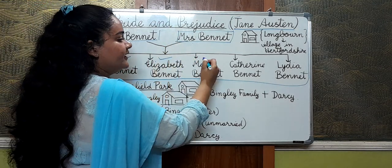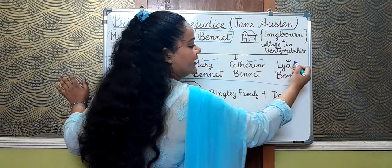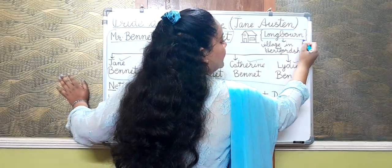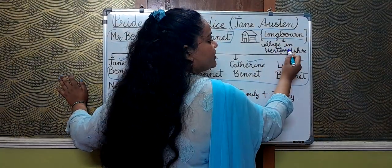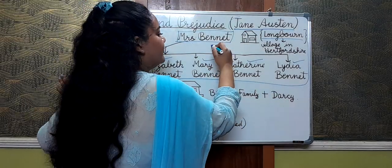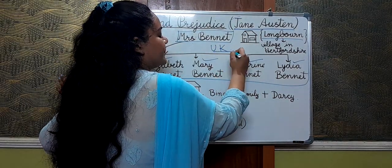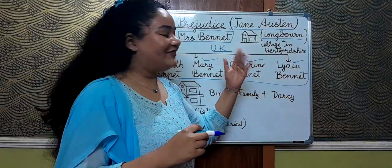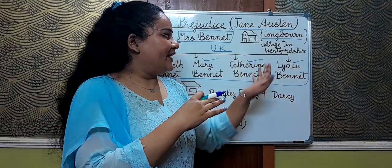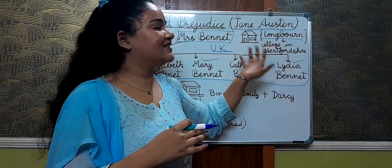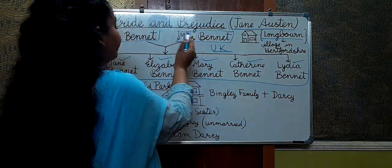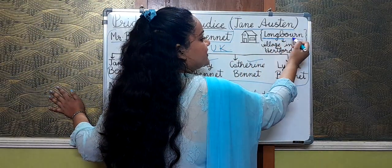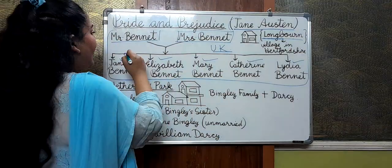The five daughters are: Jane Bennet, Elizabeth Bennet, Mary Bennet, Catherine Bennet, and Lydia Bennet. The Bennet family lives in Longbourn, which is a village in Hertfordshire. This is a story set in the United Kingdom, so all the village names are going to be very Anglican and fancy — you just have to memorize them.